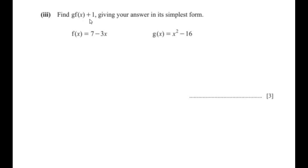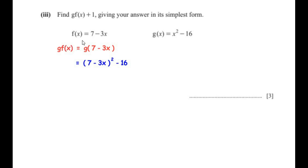Now find g(f(x)) plus 1, giving the answer in its simplest form. We focus on g(f(x)) first. This means the f(x) value needs to be substituted wherever there is x in g(x). So in place of f(x) we write 7 minus 3x, and wherever there is x in g(x) we replace x with 7 minus 3x. This gives g(f(x)) as (7 minus 3x) squared minus 16.